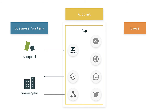On the left side we can see business systems. We refer to a business system as any system the business uses to communicate with the Sunshine Conversations application. These are the tools you'll use to handle conversations with end users, manage tickets, or handle other business tasks. For example, this app is connected to Zendesk Support and is connected to other business systems using webhooks and the API.